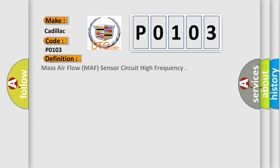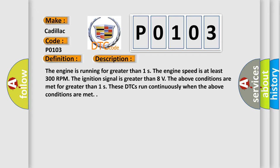The basic definition is Mass Airflow MAF Sensor Circuit High Frequency. And now this is a short description of this DTC code. The engine is running for greater than 1 second.